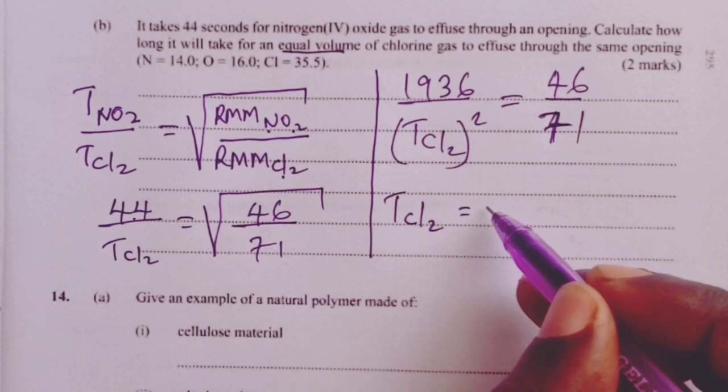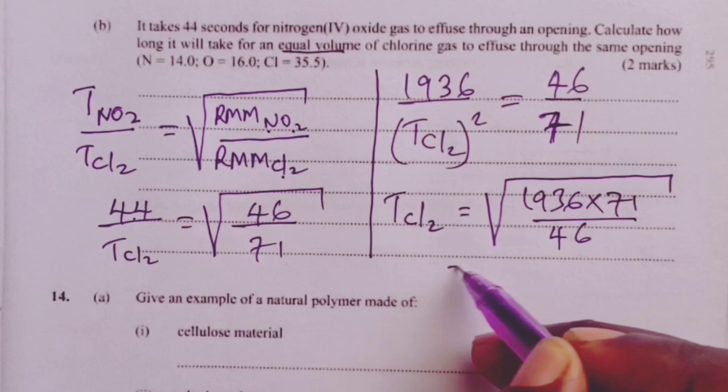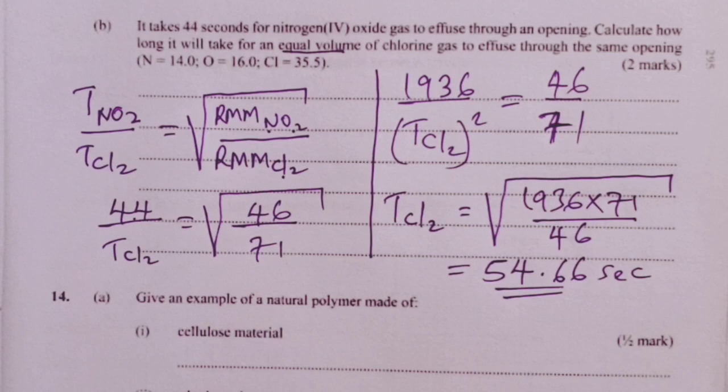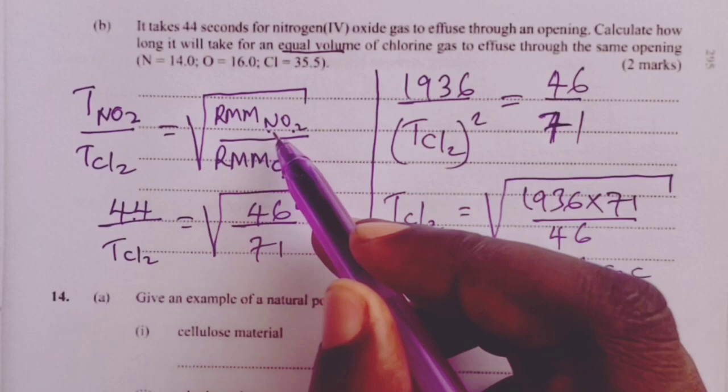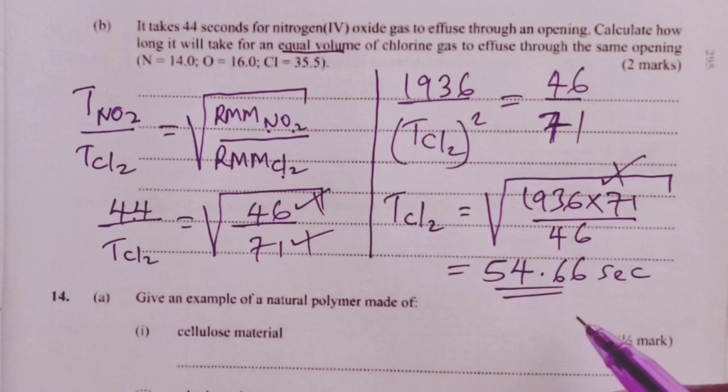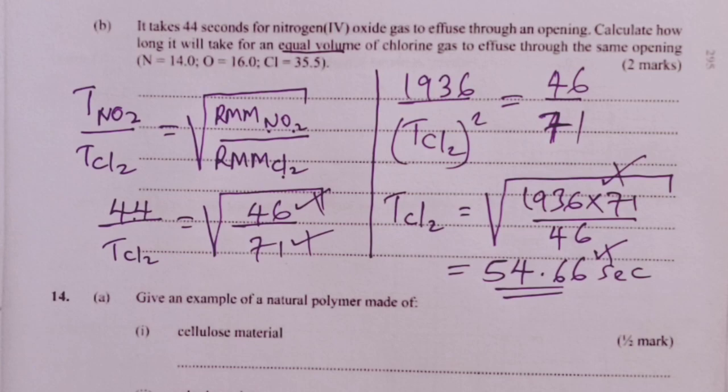From here, I can go for the time of chlorine, which would be given by the root of 1936 multiplied by 71 divided by 46. On a good calculator, this is supposed to give us 54.66 seconds for our answer. How do we earn the two marks? A half a mark for the correct relative molecular mass NO2, a half a mark correct relative molecular mass Cl2, a half a mark for the root to give us time of chlorine, and finally, a half a mark for the answer.